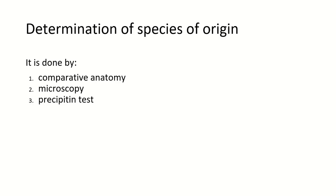The determination of species of origin is done by comparative anatomy — comparing the anatomical characteristics of species — microscopic examination, and the precipitant test. In the precipitant test we use anti-human serum to identify the species. This part has been covered in detail in unit 3, so you can first learn from that.